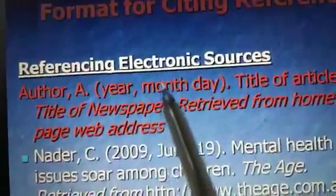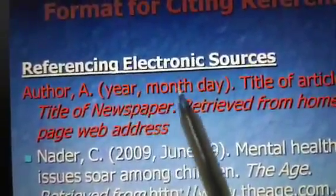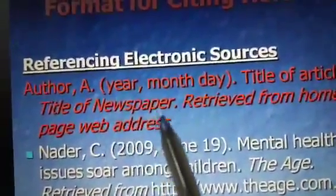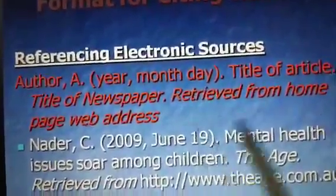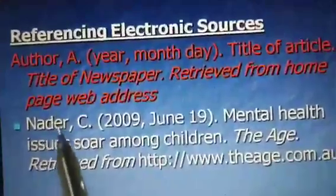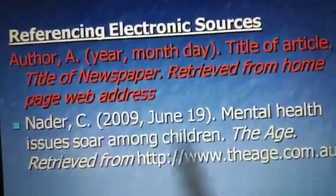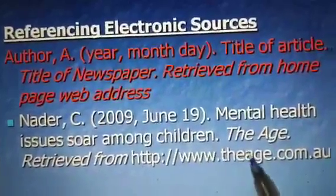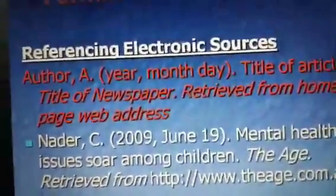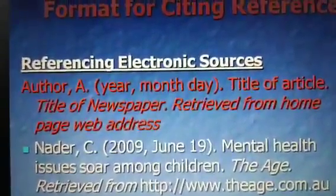For electronic sources, you write the author's name, year of publication, month or day of publication, title of the article, title of newspaper or website, and the URL. For example: Nadar C., 2009, June 19, 'Mental Health Issues in Problem Children,' The Age, retrieved from http://www.theage.com.au. Through this example you can learn how to write references and use them in a bibliography.